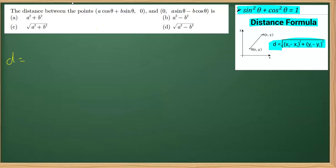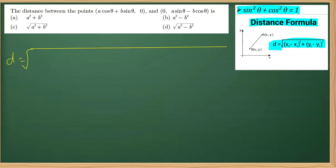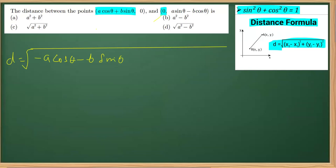Now we have to find the distance here. Let's place the square root first. This is whole under root of (x2 - x1) whole square. So, what is x2? It is 0, so 0 minus this will be minus (a cosθ + b sinθ). We are finding x2 minus x1, so this is 0 minus this, which gives minus of this.